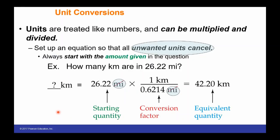We use these units by multiplying and dividing. Whenever we do a calculation with units, we always set up our calculations starting with the given quantity. For example, how many kilometers are in 26.22 miles? The number of kilometers is going to be equal to 26.22 miles times the conversion between miles and kilometers. Notice that miles cancel out and we are left with kilometers. We always set up our conversion factor so that whatever we want in our answer is on top and the units we don't want are canceled out.